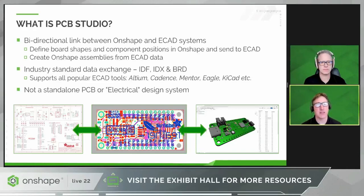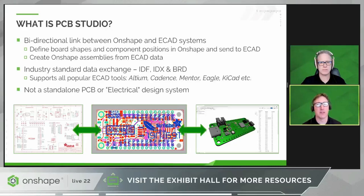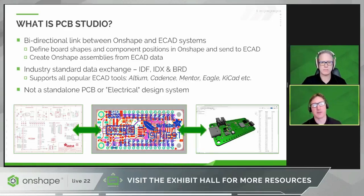The EE can then update that design in their ECAD system — they can add components, adjust the board shape, and send it back via PCB Studio to Onshape again, which in turn creates an updated Onshape assembly. If necessary, the Onshape user can subsequently modify that design and send it back to ECAD again, and so on and so forth, until both sides are happy. So we're ending up with this back-and-forth Onshape design interchange, going from ECAD to Onshape and from Onshape to ECAD.